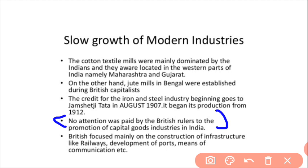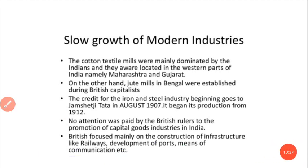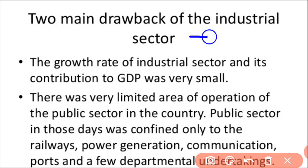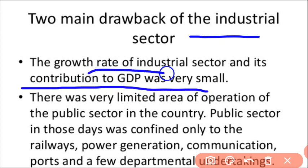No attention was paid by British rulers to the promotion of capital industries in India. The British focused mainly on the construction of infrastructure — railways, development of ports — so that they could export raw materials from our country, as well as means of communication so they could easily communicate and control trade.